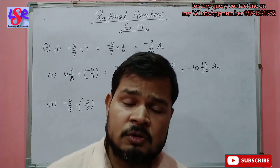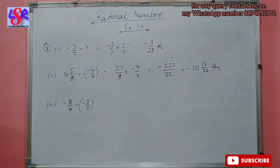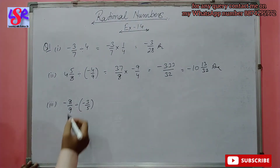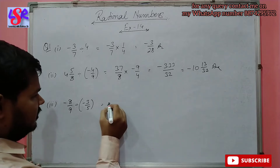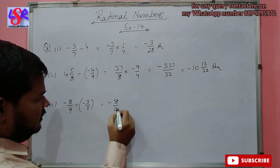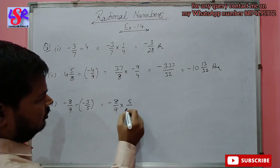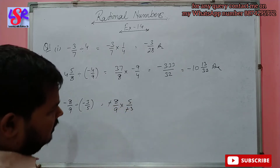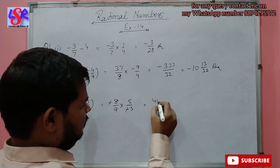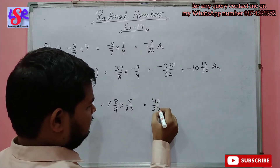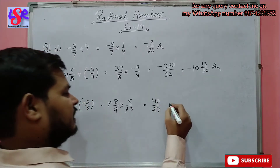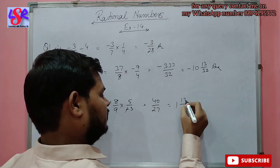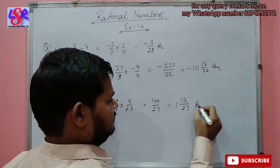Now moving to the third part of question number 1, we have minus 8 upon 9 divided by minus 3 upon 5. Changing division to multiplication by taking the reciprocal and reducing, we get 40 upon 27. This can also be written as 1 whole 13 upon 27 as the answer.